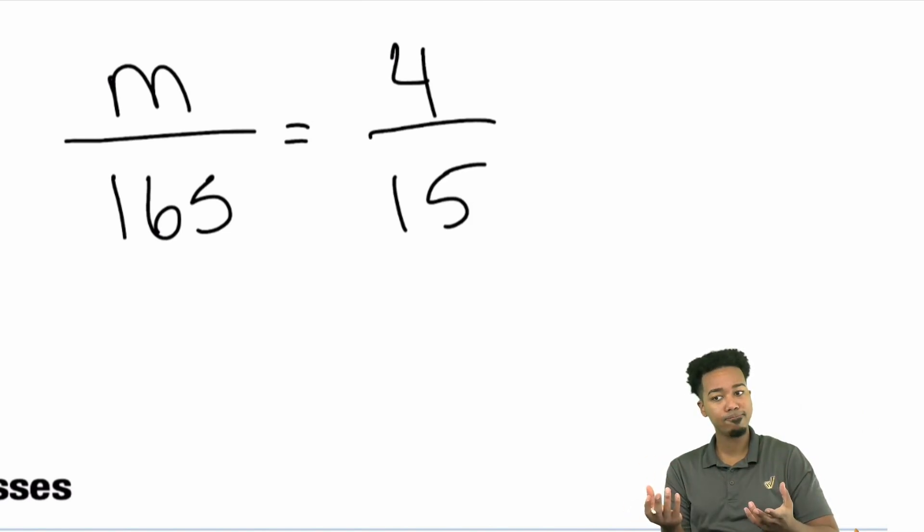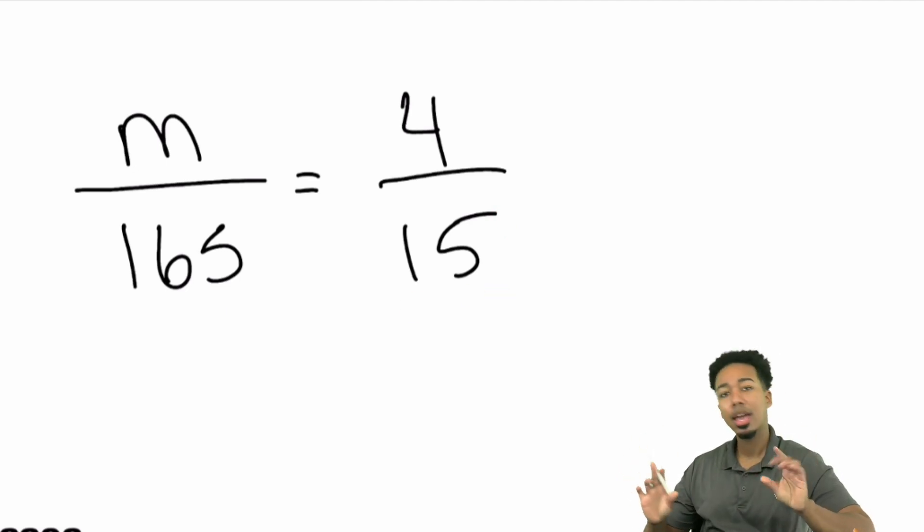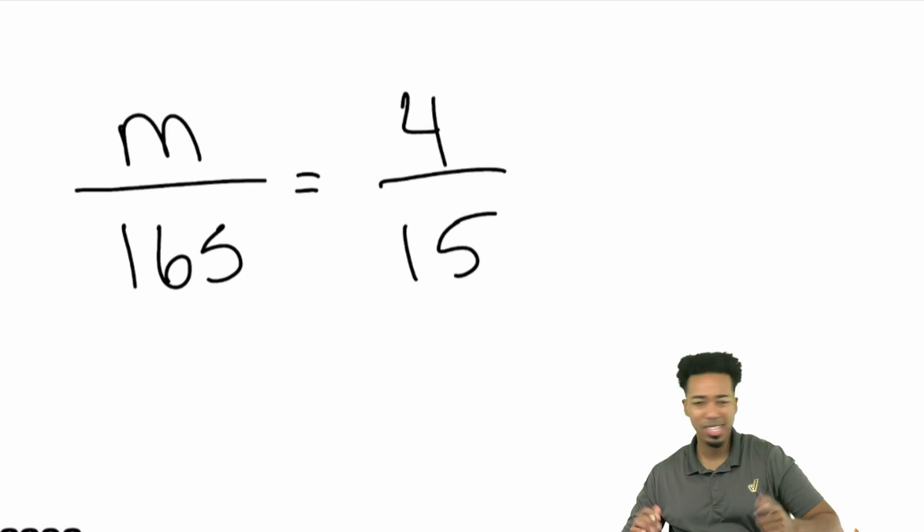But the fact of the matter is you can actually simplify before you do that cross multiplication. Here's how. If I take a look here, I don't want to do 165 times 4 because that's going to be a big number. Then I got to divide the whole thing by 15 and that's going to be a lot. What I can realize is this 165 and 15, they're both in either denominator. And remember this trick about equations. It's not even a trick, it's just a rule. Whatever you do to one side, you do to the other. One more time. Whatever you do to one side, you do to the other.